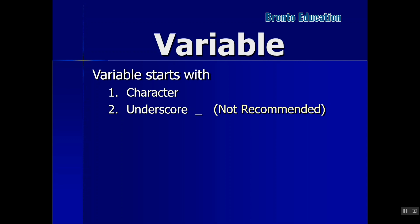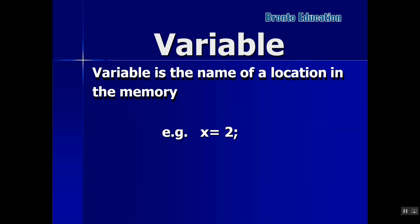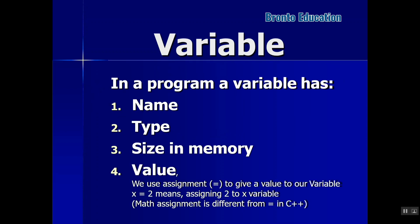Variable names start with a character or underscore — using underscore is not recommended. A variable is the name of a memory location in RAM; for example, x = 2 means 2 is saved inside x. A variable has a name, a type, and a size in memory. Integer takes 32 bits, which is 2^32 - 1 if unsigned (only positive numbers, 0 to 2^32 - 1). If signed, it saves from -2^16 up to +2^16 - 1.